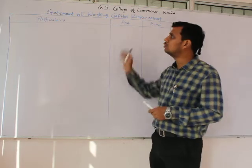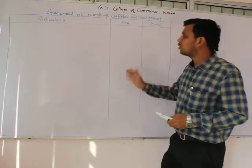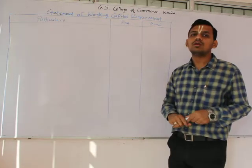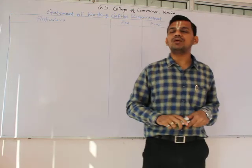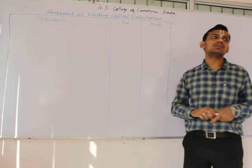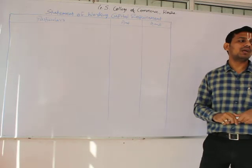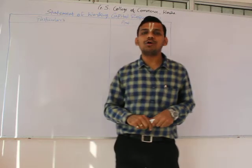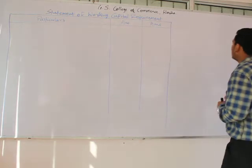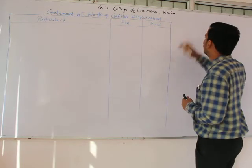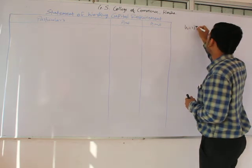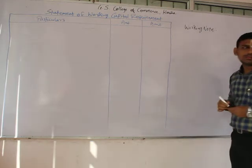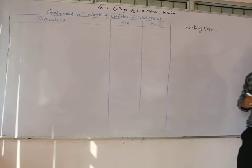We will start with the solution. Before getting to the statement of working capital, as we have been given sales which includes the profit element also, we would first of all deduct the profit element from it so that we could reach the cost of sales. This cost of sales can be used as a platform for the calculation of various aspects of the working capital requirement. So we will prepare working notes for the calculation of cost of sales.